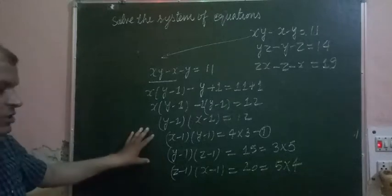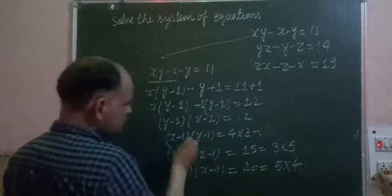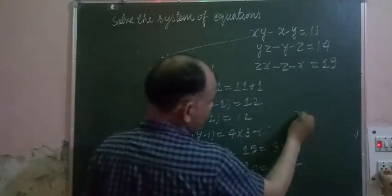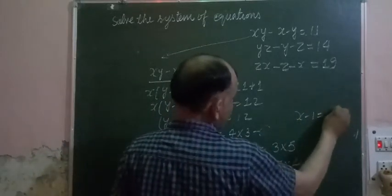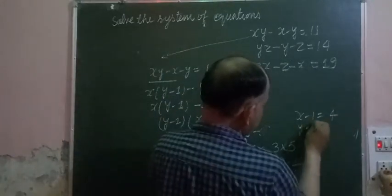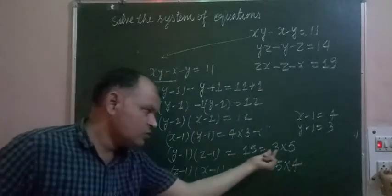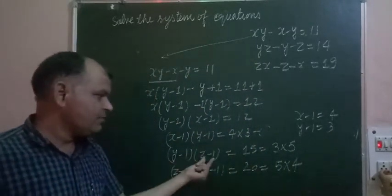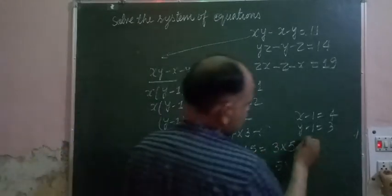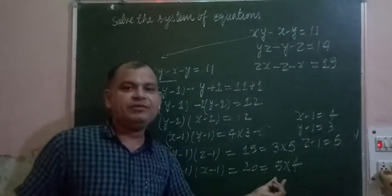From these three equations, you can easily detect that x - 1 = 4, y - 1 = 3, and z - 1 = 5.